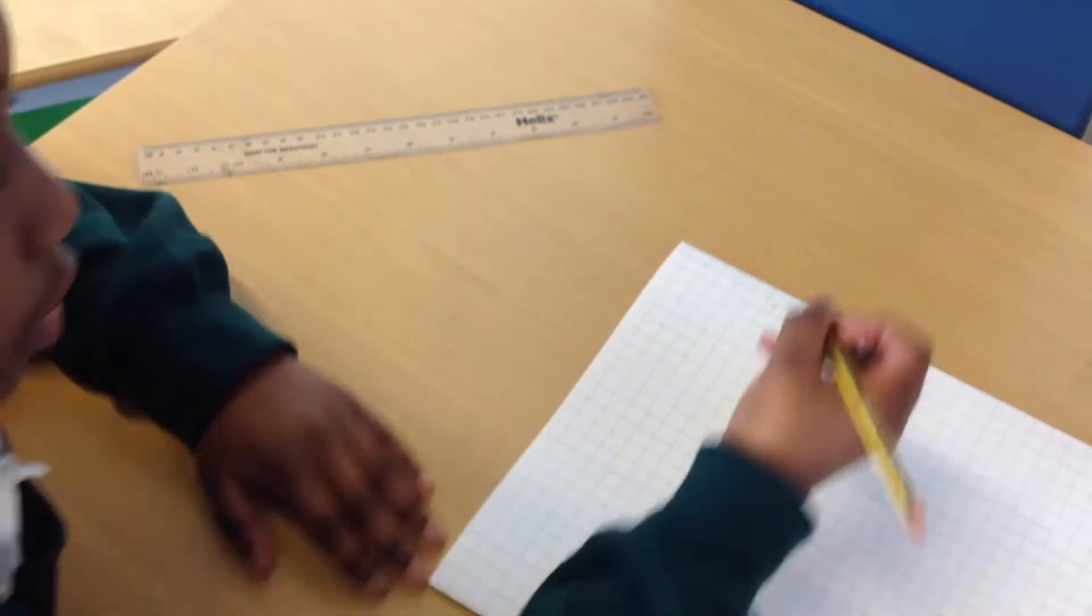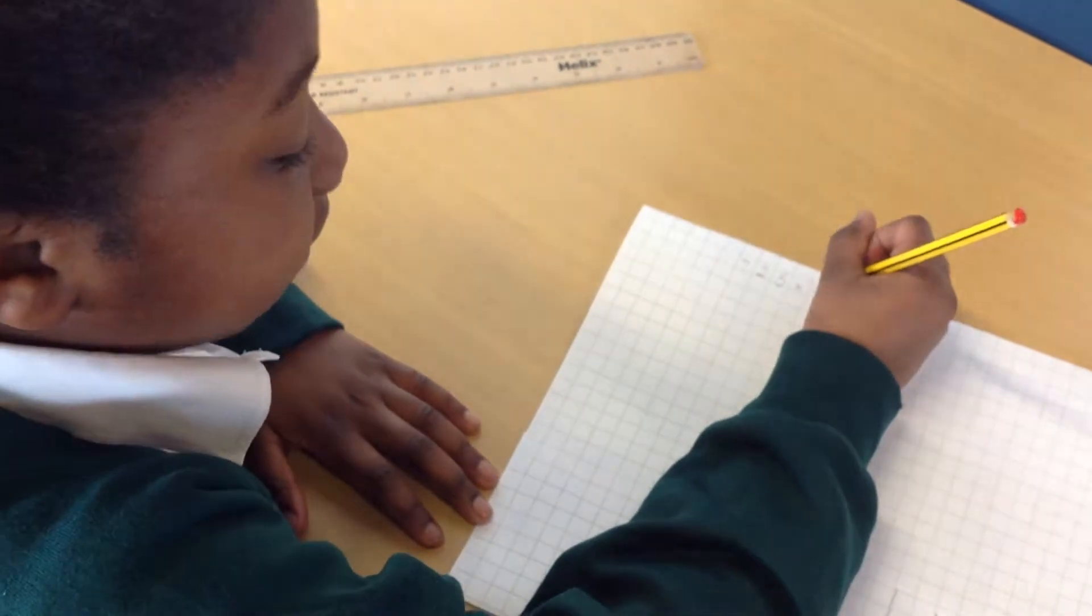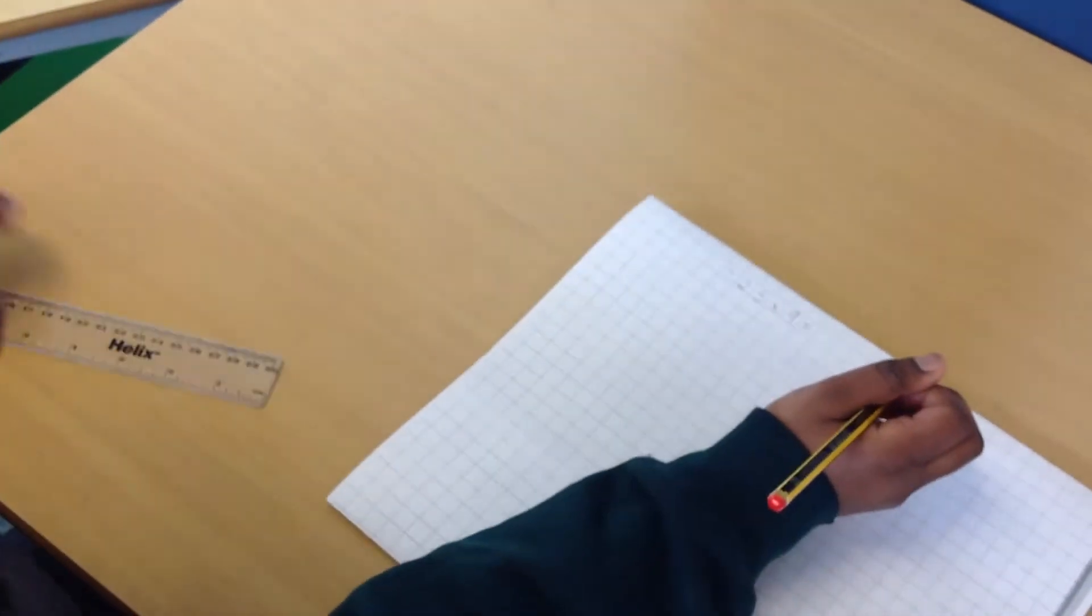We use grid for multiplication. Because your question is 725 times 9, we are going to draw our grid.